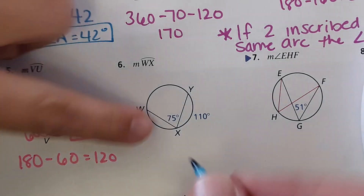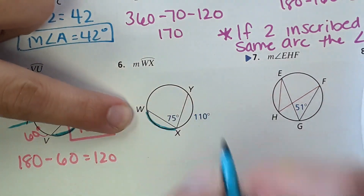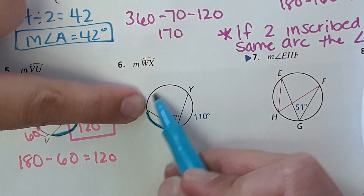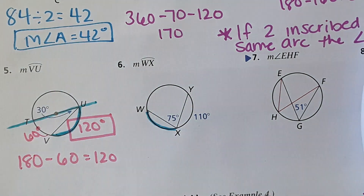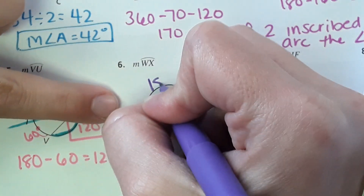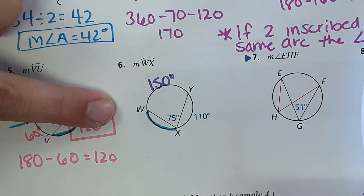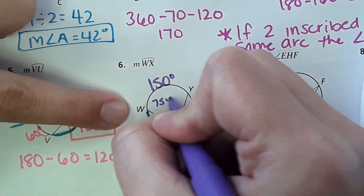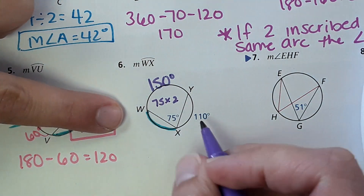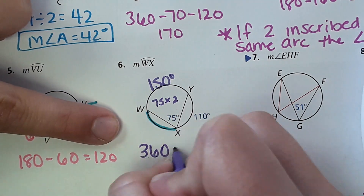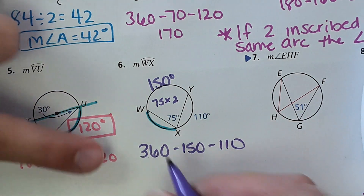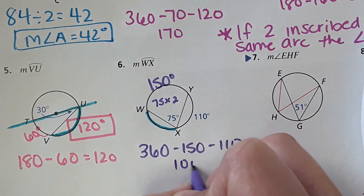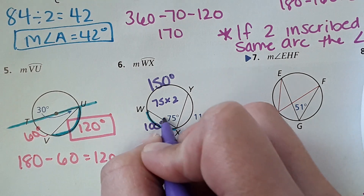Next, find the measure of arc WX. We're told one arc is 110°. We take the inscribed angle of 75°, multiply by 2 to get 150°. Then 360 minus 150 minus 110 gives us the remaining arc. Arc WX equals 100 degrees.